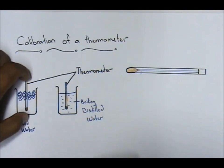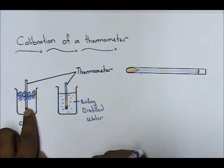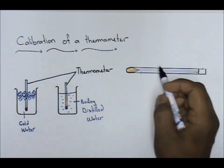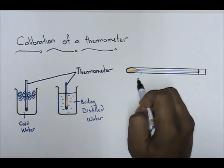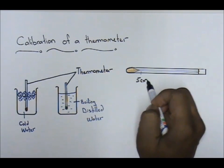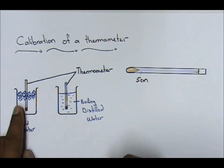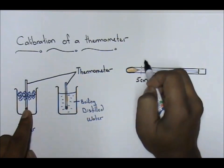So the moment I put it in ice-cold water here, what will happen is the mercury here will rise in the capillary tube. Now what happens here is, let's just say the mercury here rises 5 centimeters. The mercury rises 5 centimeters in cold water.